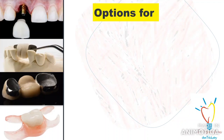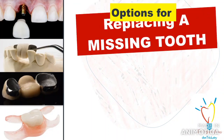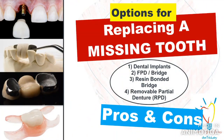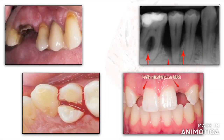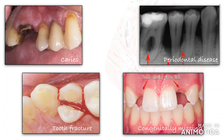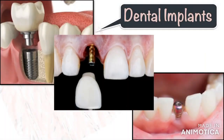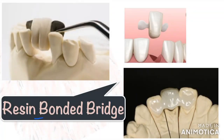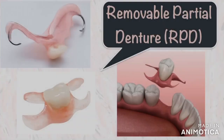Hello everyone. In this video you will see the different options for replacing a missing tooth, the pros and cons of all the different options, and some important factors that should be considered when choosing between them. People can lose teeth because of numerous reasons: caries, trauma, periodontal diseases, or they can be congenitally missing. Here I will talk about 4 different options for replacing a single missing tooth. These options are a dental implant, a bridge or conventional fixed partial denture, resin reinforced or resin bonded bridge, and a removable partial denture.